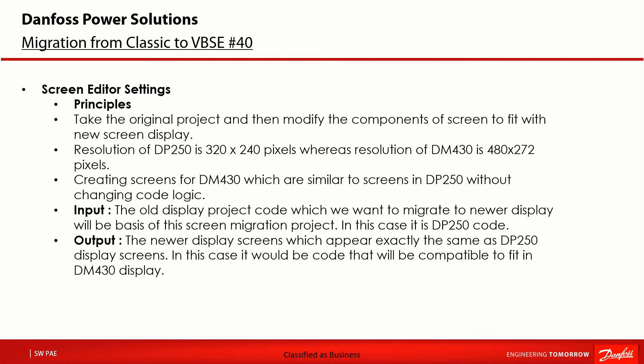The old display project code which needs to be migrated to a newer display will be the basis of this video example migration project. So the DP250 code is the input; the output will be the newer display screens which appear exactly the same as the DP250 display screens. In this case it would be code compatible to fit in the DM430 display. As an assumption, all components will be placed at exactly the same locations as in DP250, and the code logic is not to be changed as it may affect the functioning of the machine or display in significant ways.